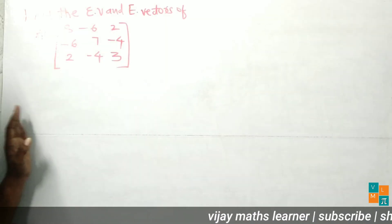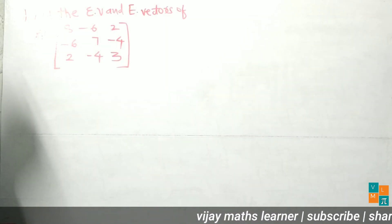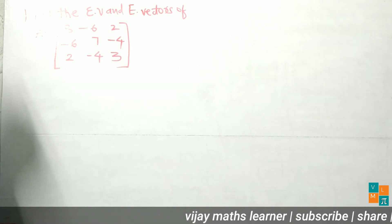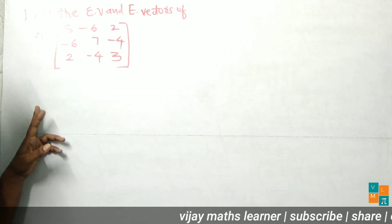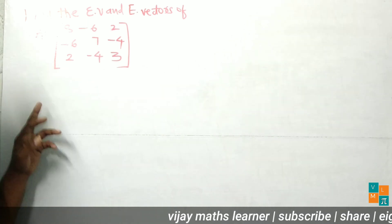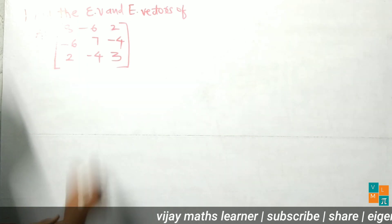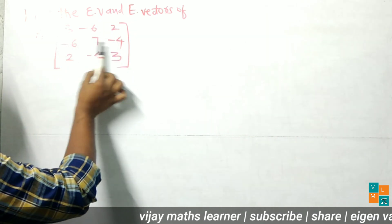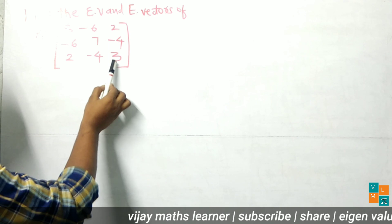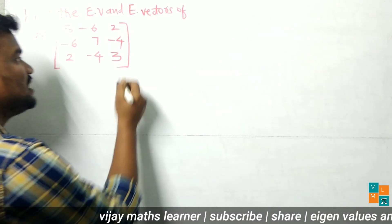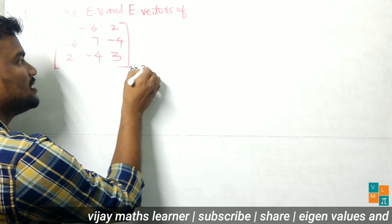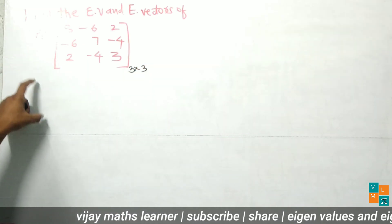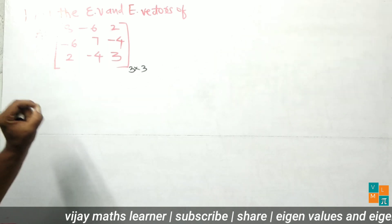The question given is: find the eigenvalues and eigenvectors of matrix A. The entries of matrix A are 8, -6, 2, -6, 7, -4, 2, -4, 3. These are the entries of the square matrix A, and it is a 3 by 3 square matrix. Here we have to find the eigenvalues.